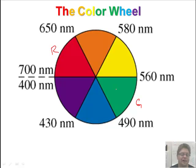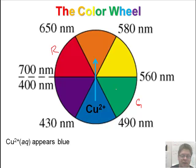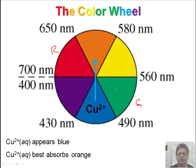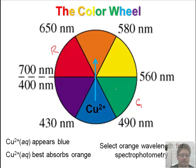So if you had a sample of a solution of copper, it appears blue. Copper appears blue, so what color are we going to want to choose for our absorption? And the spec 20 will want a wavelength between 650 and 580. It's complementary on the color wheel. So it best absorbs orange. Appears blue, it best absorbs orange. Select the orange wavelength for the spectrophotometry.